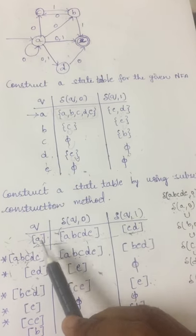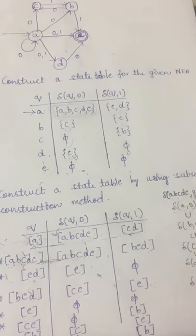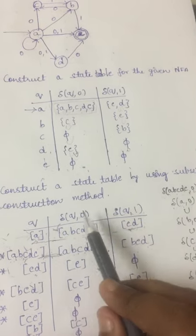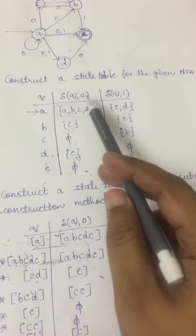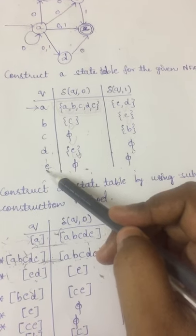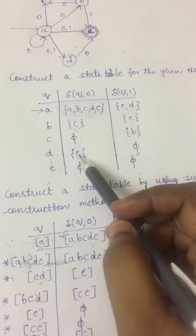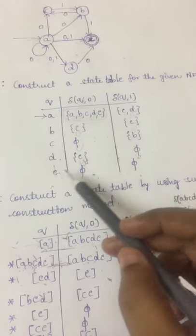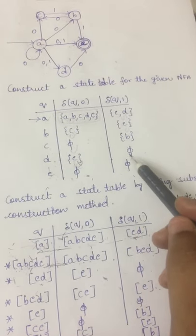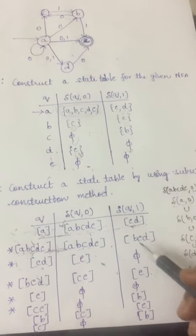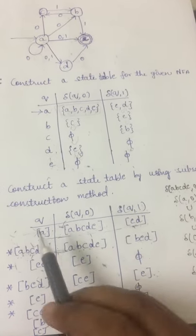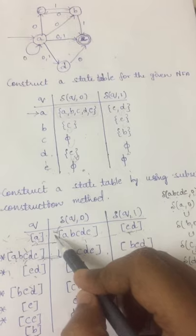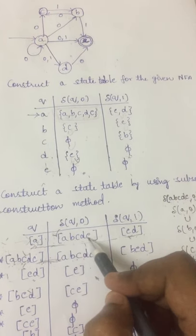Now we have to write in the similar manner for the next reachable state of A, that is E, D. For state ED under input 0: delta(E,0) = E and delta(D,0) = E. Performing the union operation we get E. Similarly, for state ED under input symbol 1, it is E union E, which is nothing but E.